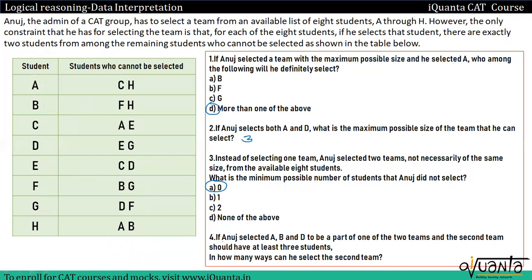Fourth question पर आते हैं। If Anuj selected A, B and D — A को select करेगा तो C और H को select नहीं करेगा, B को select करेगा तो F और H को select नहीं करेगा, D को select करेगा तो E और G को select नहीं करेगा — to be part of one of the two teams, and the second team should have at least three students. In how many ways can he select the second team? Means at least three students लेने हैं — available possibilities हैं: C, E, F, G and H।